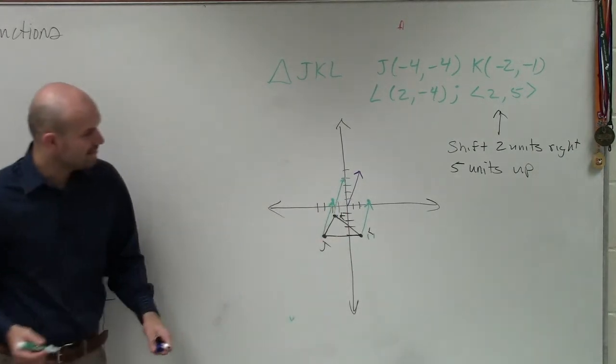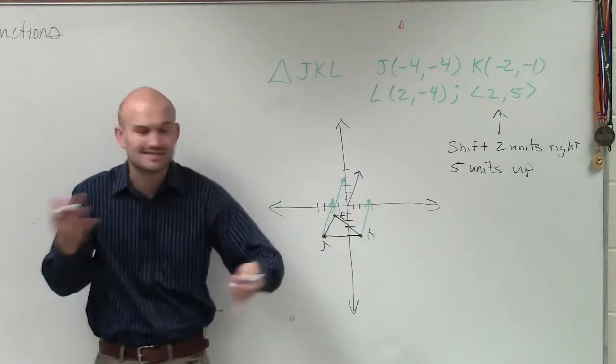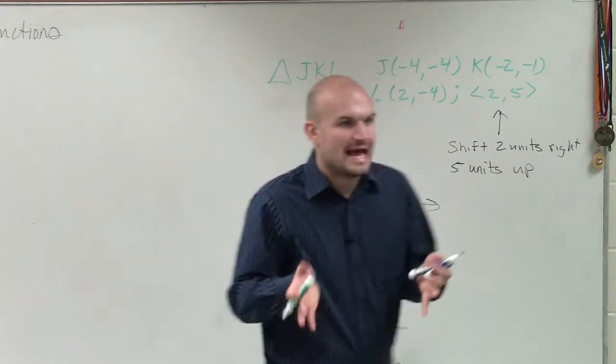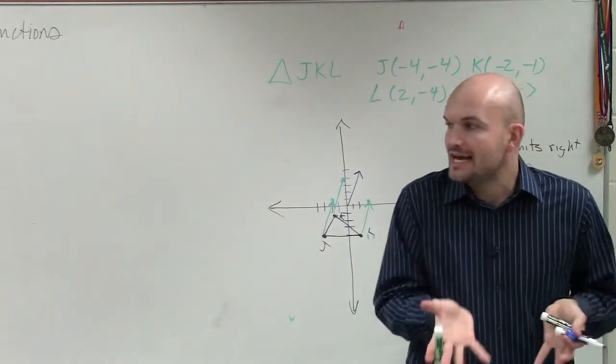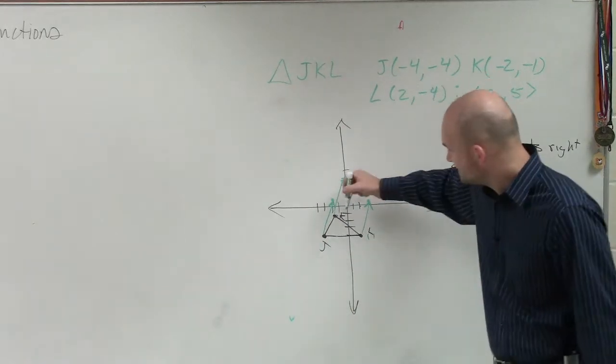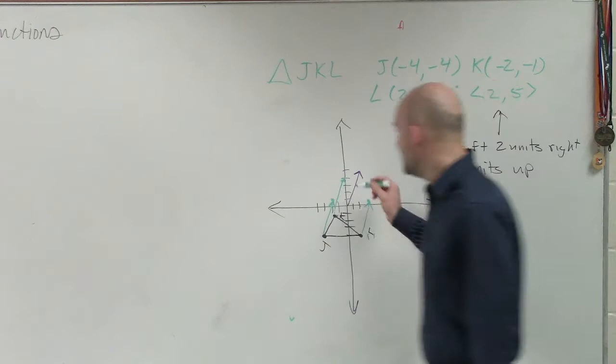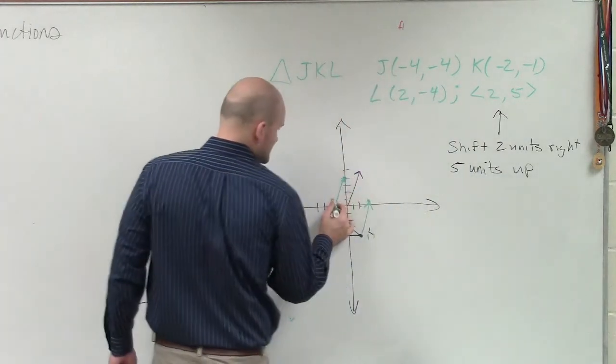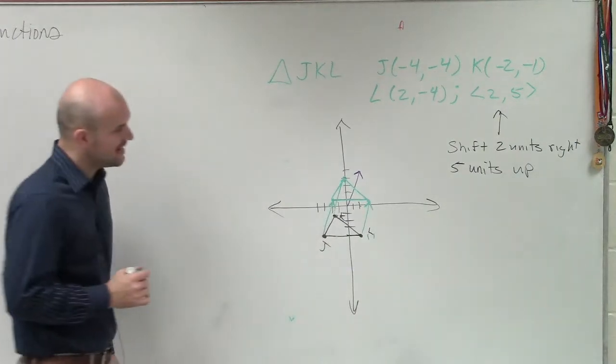So do you guys see what I did is I took this vector, my transformation vector, I grabbed it from the origin. This is just another way I'm showing you guys how to do this. And they're telling me to take all of my points, shift them over 2 units, and shift them up 5. So what I did is from each one of my points, I applied the transformation vector. Now I have my new three points that I can now go ahead and sketch.